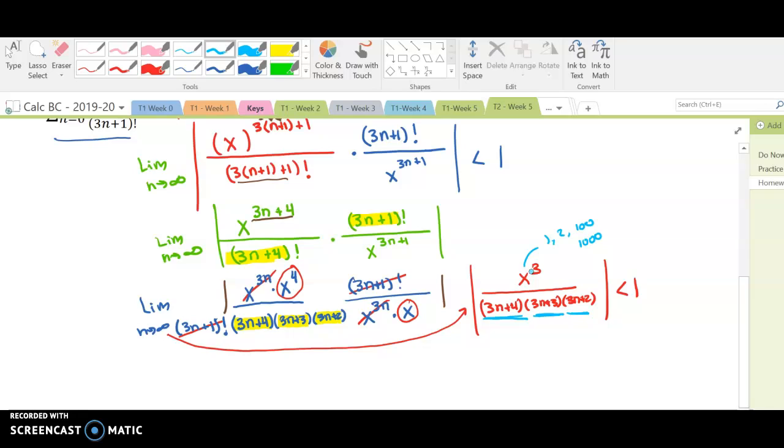So that means no matter what we plug in for x, we will always be less than 1 because this limit is 0. And 0 is less than 1.